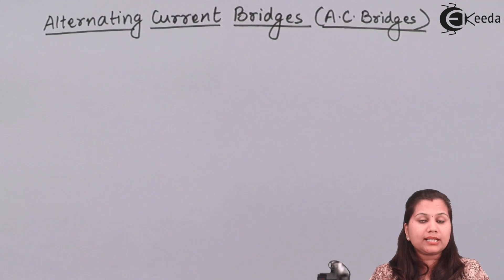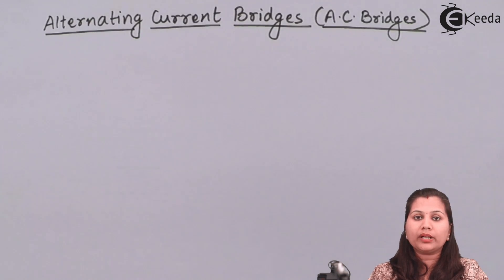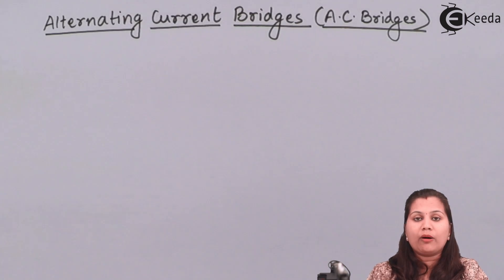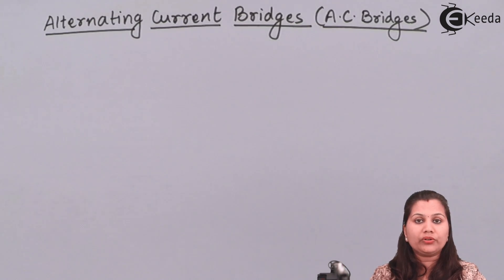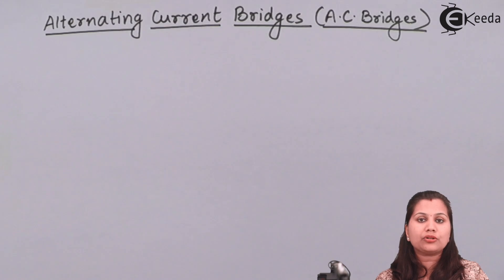These alternating current bridges are based on the Wheatstone bridge. Just like the Wheatstone bridge, it consists of four arms, and in these four arms it will have four impedances. In the Wheatstone bridge we had four resistances where P and Q were the ratio arms — the known resistances — R is the unknown resistance and S is the standard resistance. In AC bridges, we will have four impedances, which are a combination of resistance, inductance, and capacitance.